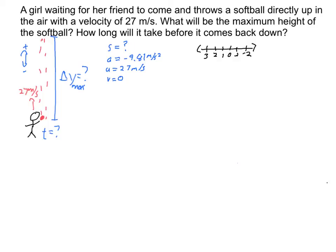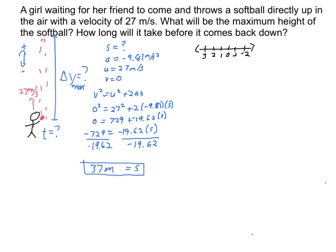Now that I have my variable bank — looking for displacement, knowing acceleration is negative 9.81, initial velocity positive 27 m/s, and final velocity zero at maximum height — I pick an equation. The only variable not listed in my variable bank is time. So what equation doesn't have time? The answer is v squared equals u squared plus 2as. After substituting in and solving — doing the squares, moving terms over, dividing by negative 19.62 (which came from 2 times negative 9.81), negative divided by negative gives positive — I come up with 37 meters, two significant figures, because that's the least number of significant figures given.